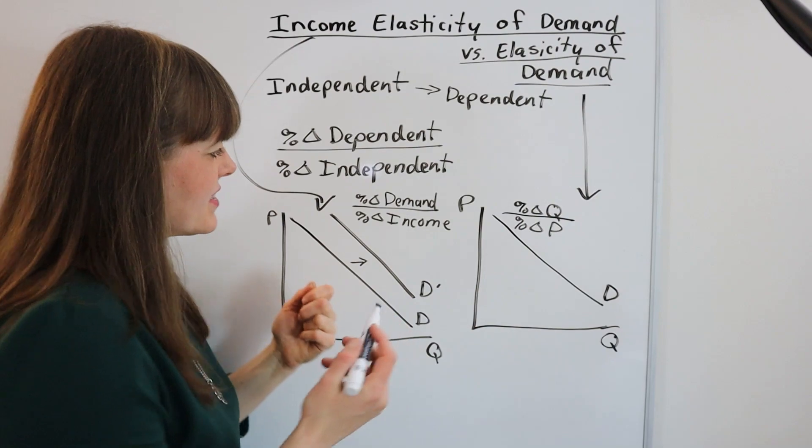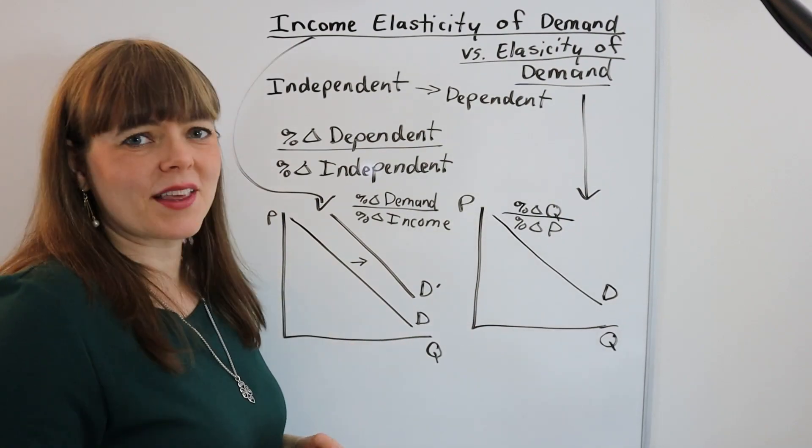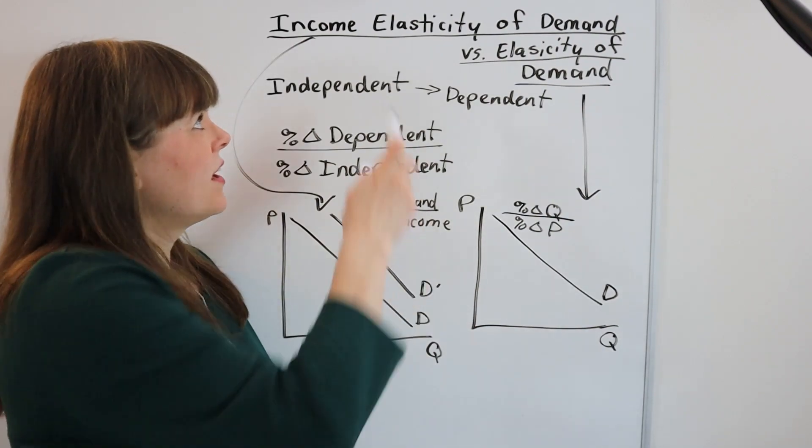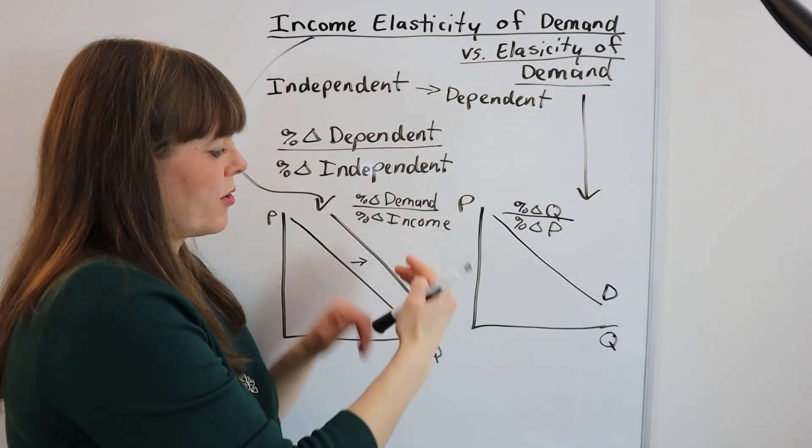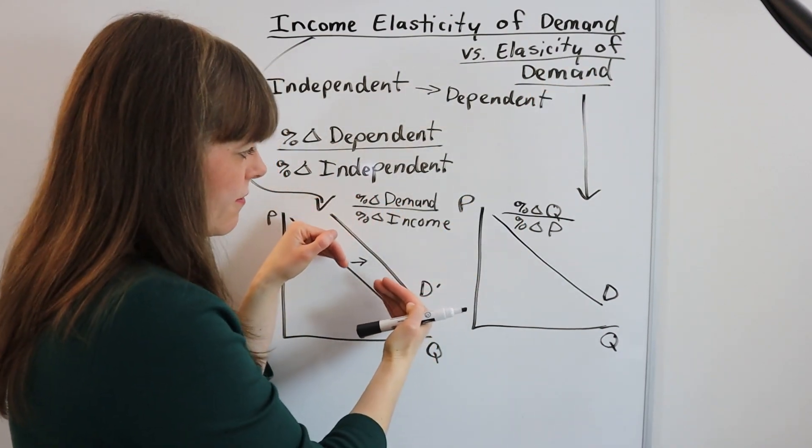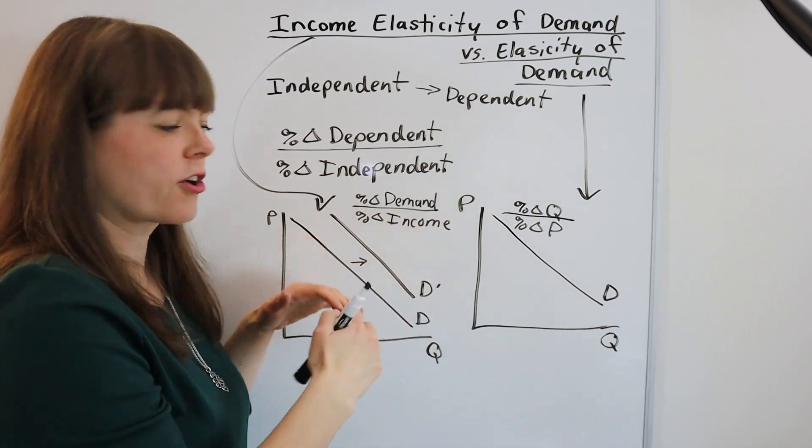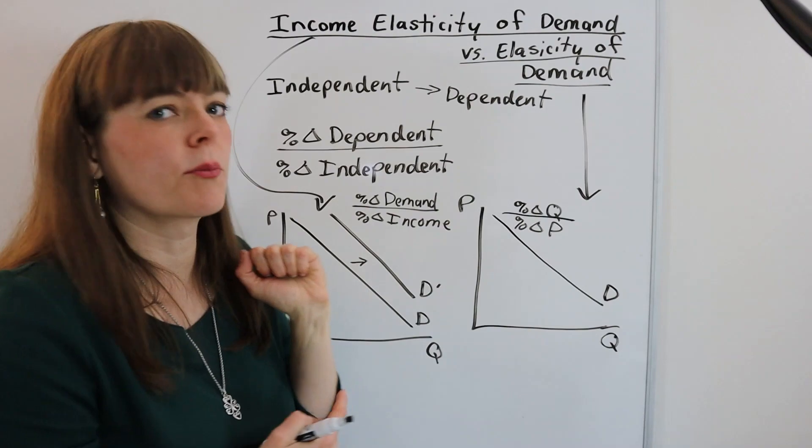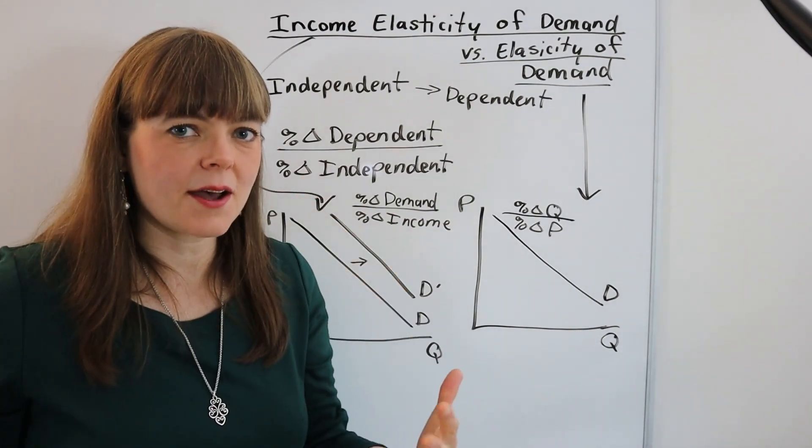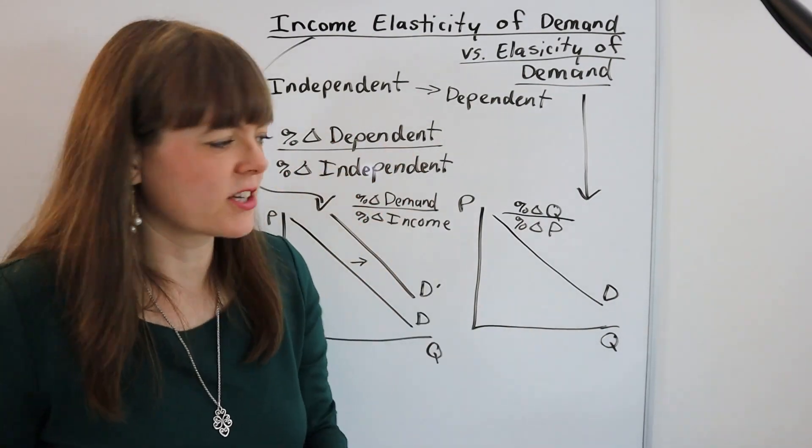That's the difference here. Even though they sound kind of similar, income elasticity of demand means that the dependent variable is the whole demand curve and the independent variable that you're looking at, how responsive is the demand curve to that independent variable, that's a person's income or perhaps a whole population's income.